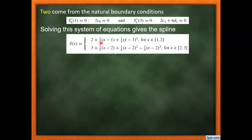After solving the system of equations, we determine: A0 = 2, B0 = 3/4, C0 = 0, D0 = 1/4, and A1 = 3, B1 = 3/2, C1 = 3/4, D1 = −1/4. So we define a spline polynomial over the interval 1 to 3 as a piecewise function: S0 on the interval 1 to 2, and S1 on the interval 2 to 3.